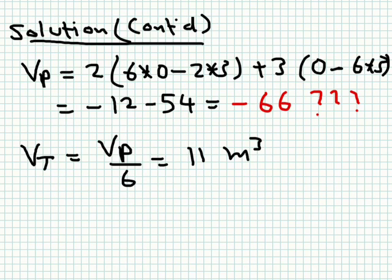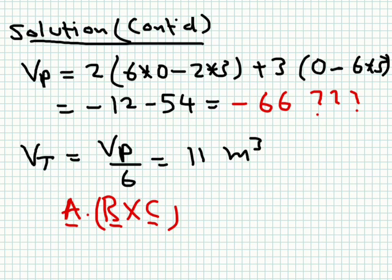If you expand the determinant, you get 2 times (0 minus 2 by 3) plus 3 times (minus 18), and if you sum this, you get minus 66. What does it mean to have a volume of minus 66? A volume must be positive. What we calculated is A dot B cross C. If the vectors have an angle greater than 90 degrees, the dot product will be negative, because it equals the product of moduli times cosine theta. So the volume here is actually 66, with the negative sign indicating the angle between A and the vector B cross C is between 90 and 180 degrees.